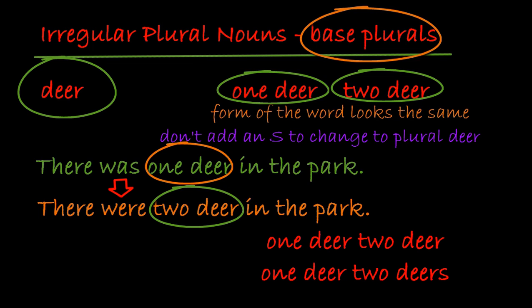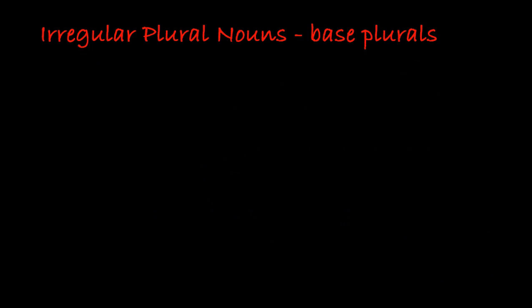One deer, two deer — this is very strange. It's a base plural. So in standard English, the form is 'two deer', and not 'two deers'. There are more words that behave this way, so let's go investigate. There are a small number of words that also behave the way deer does — these weird deer-style plurals, these base plurals.